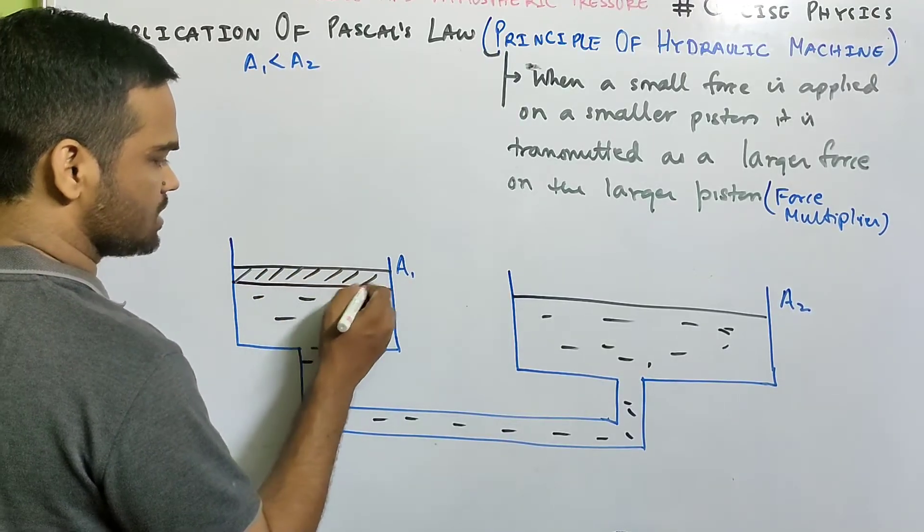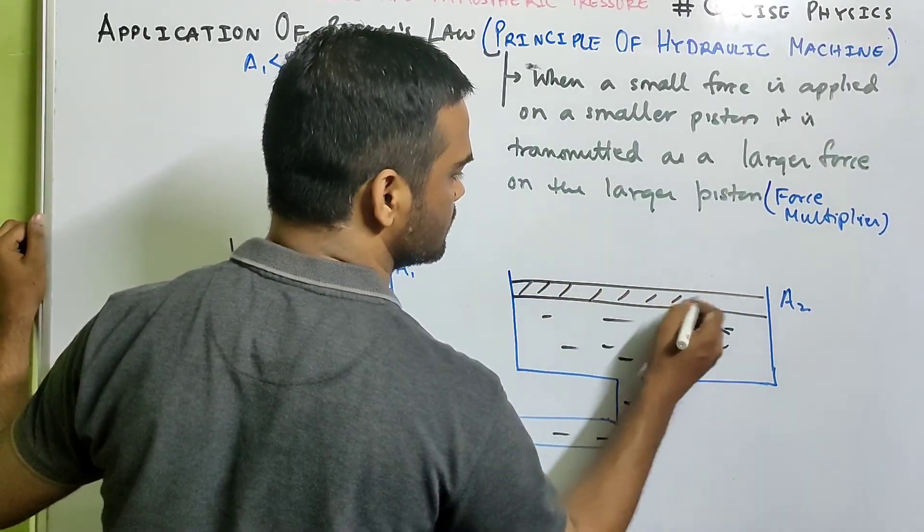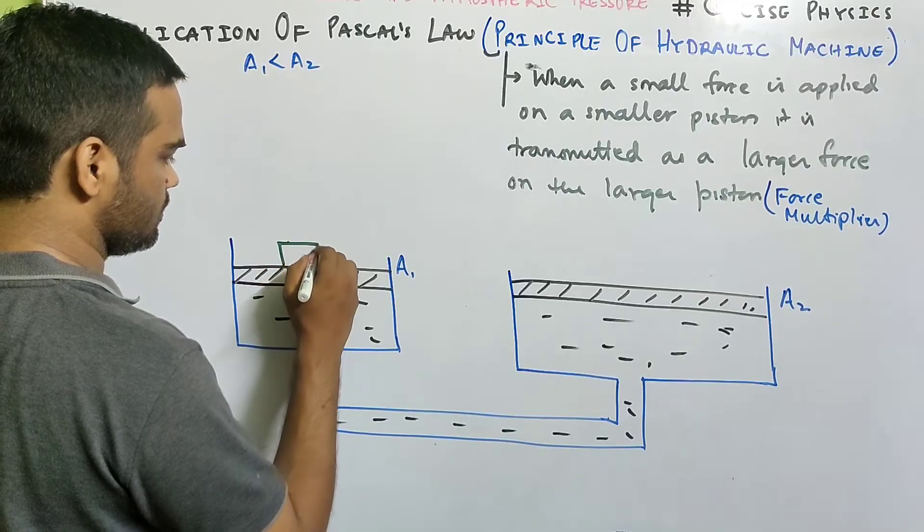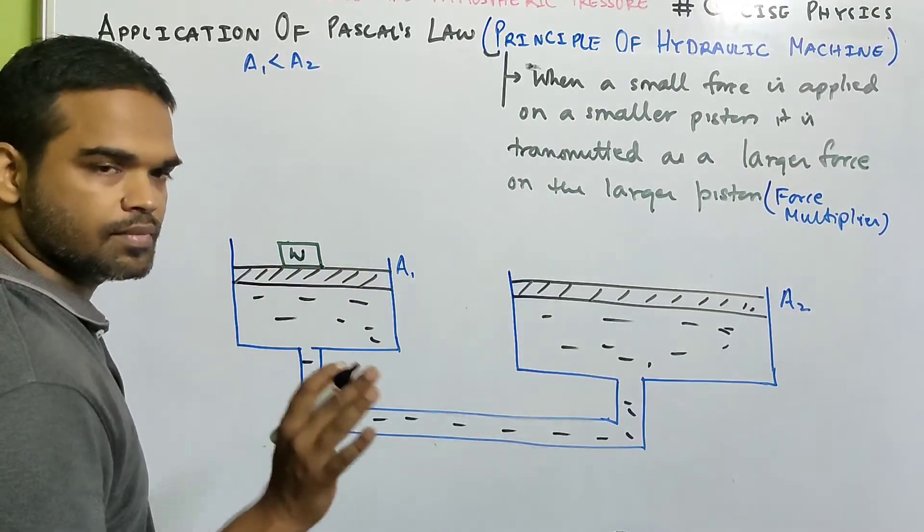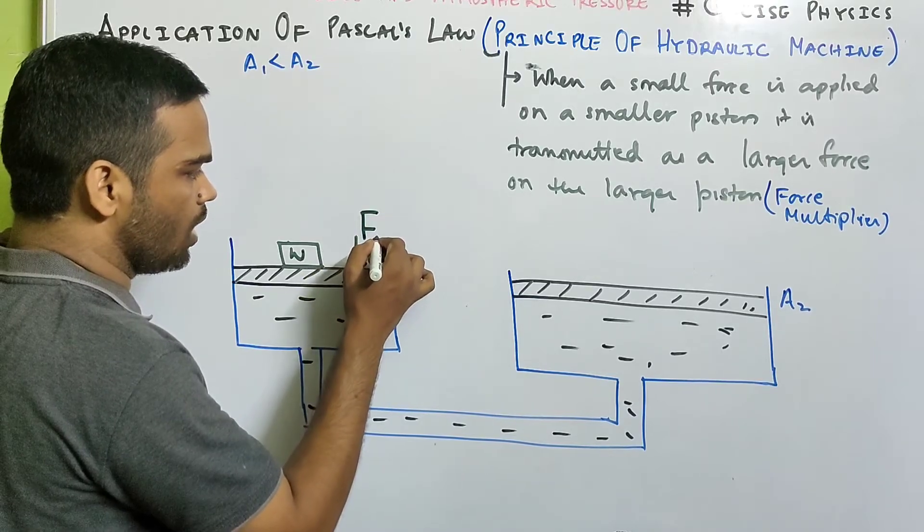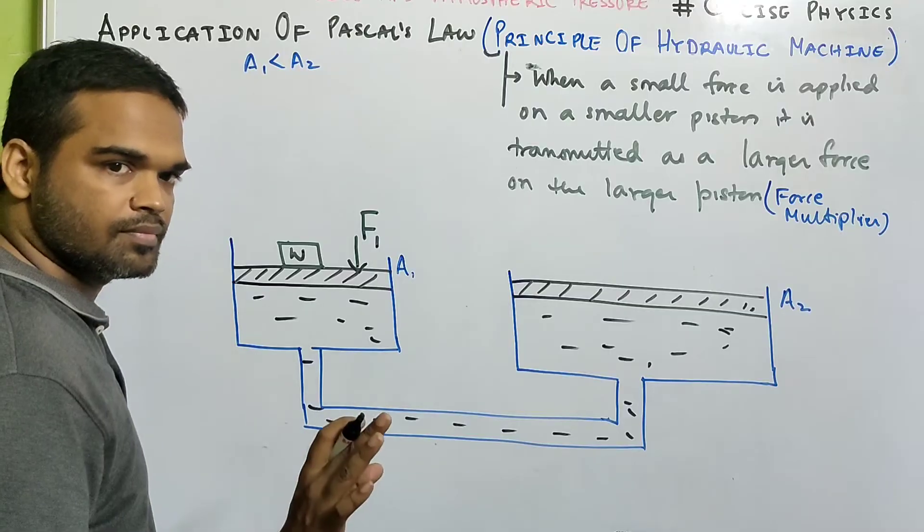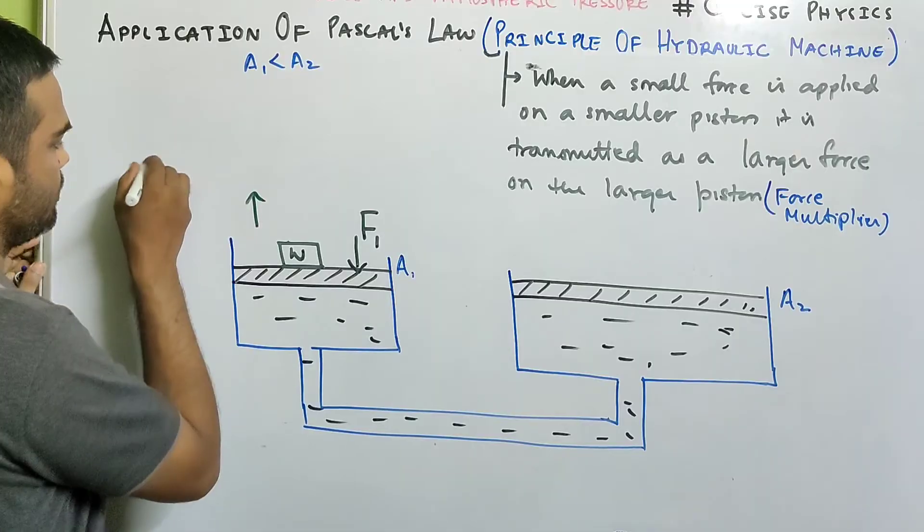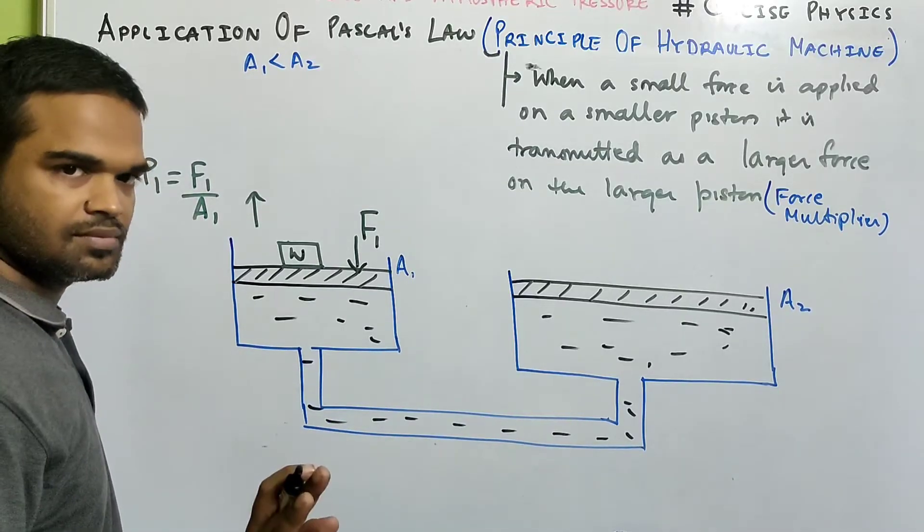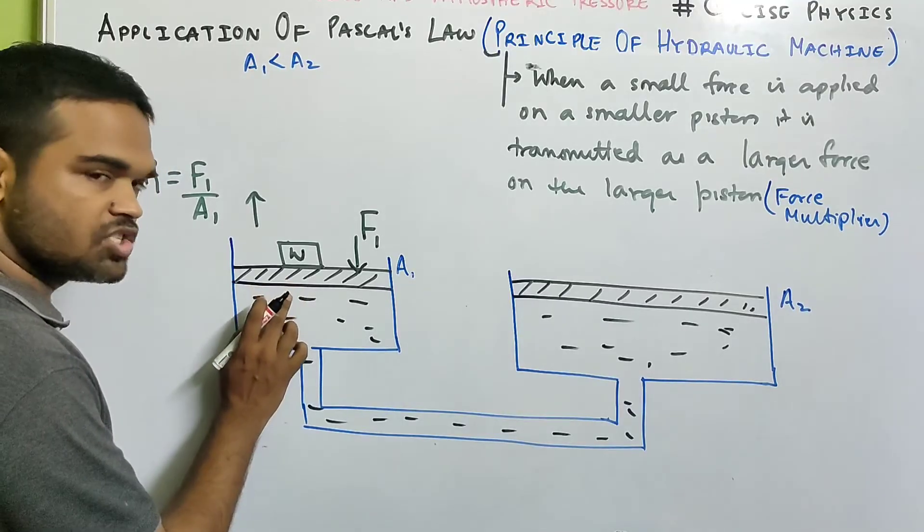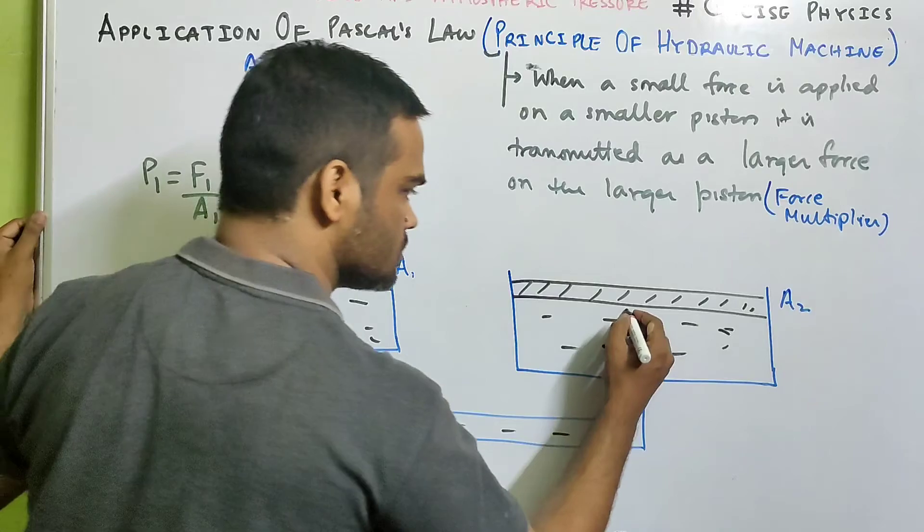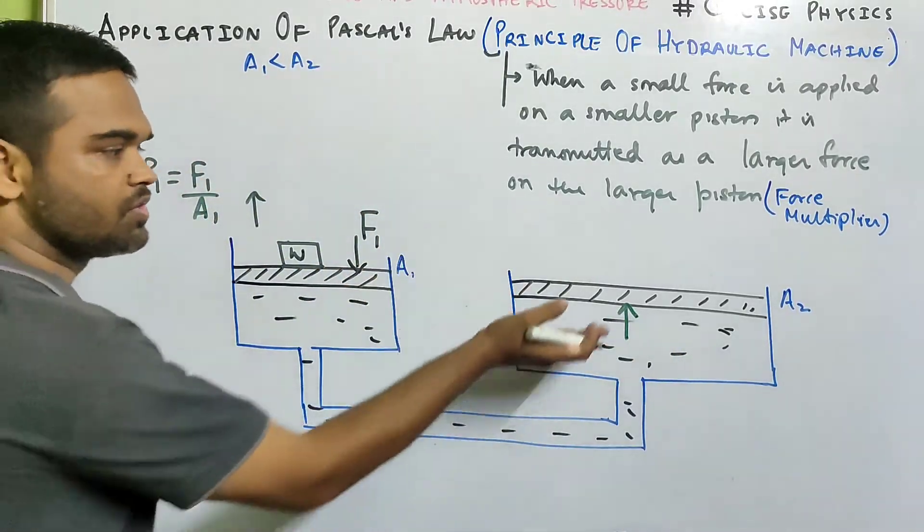In both the vessels the height will be same. Suppose this is your piston, airtight piston, this is again an airtight piston over here. Now look carefully, suppose we place a weight w over here on this piston. Then what will happen? There will be a force f1 suppose acting vertically downward. So over here the pressure developed p1 will be f1 by a1. Pressure is what? Thrust by area.